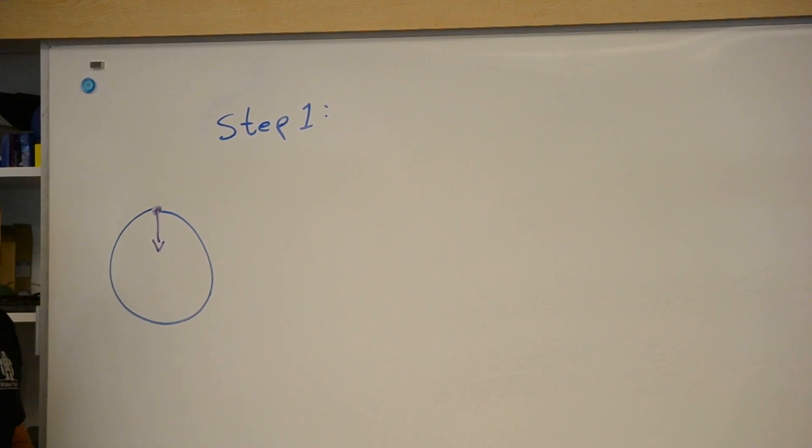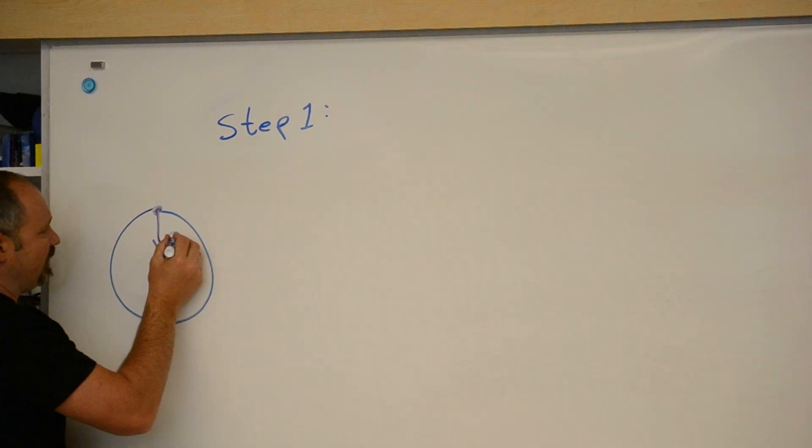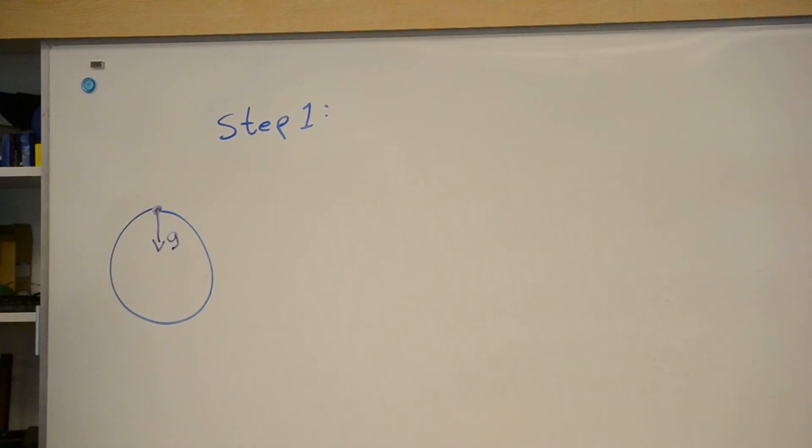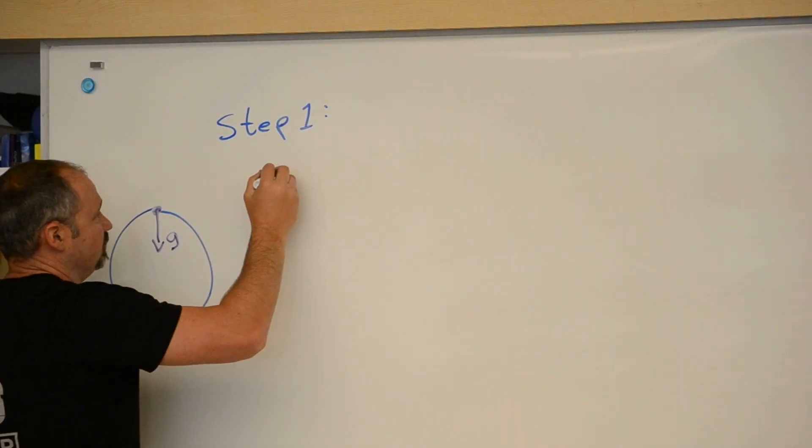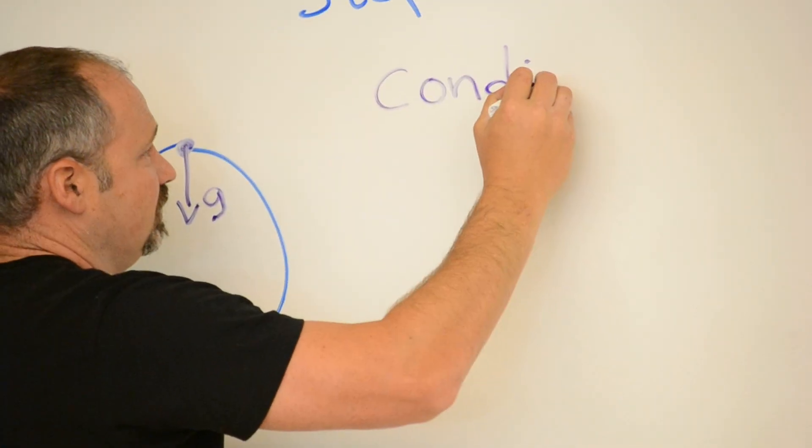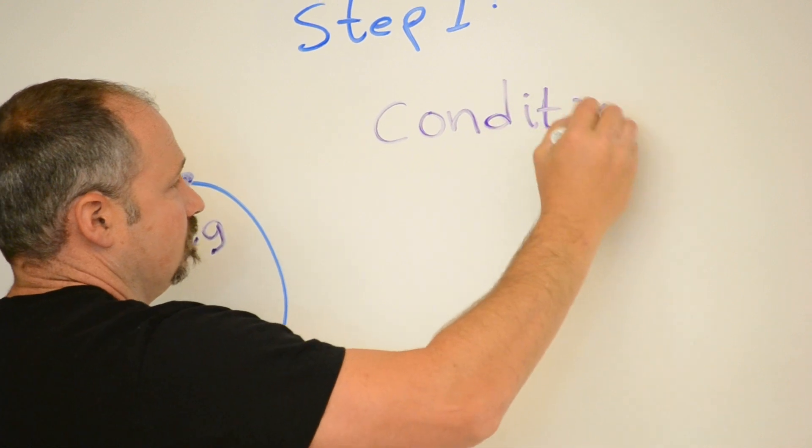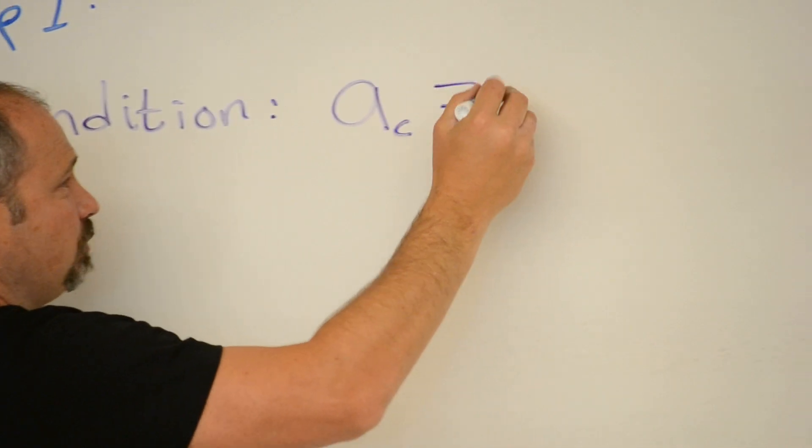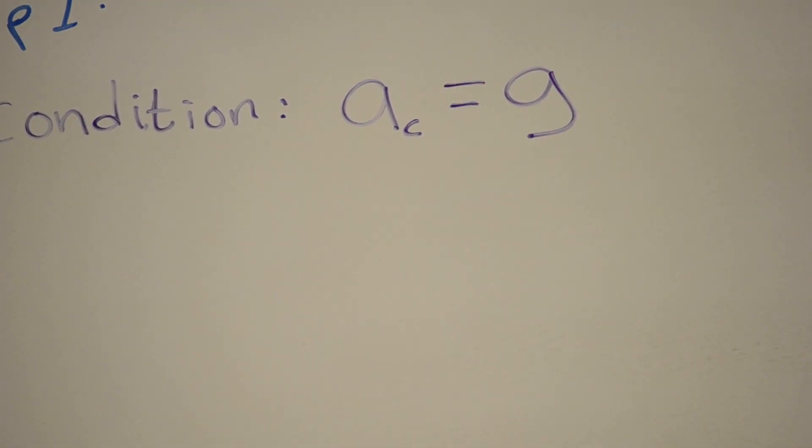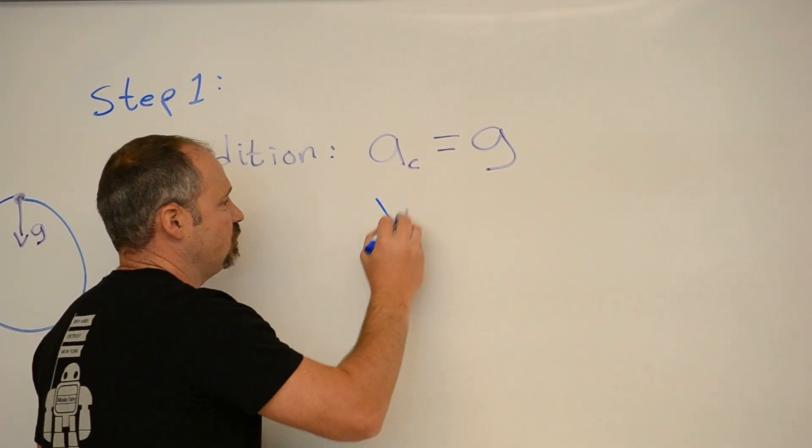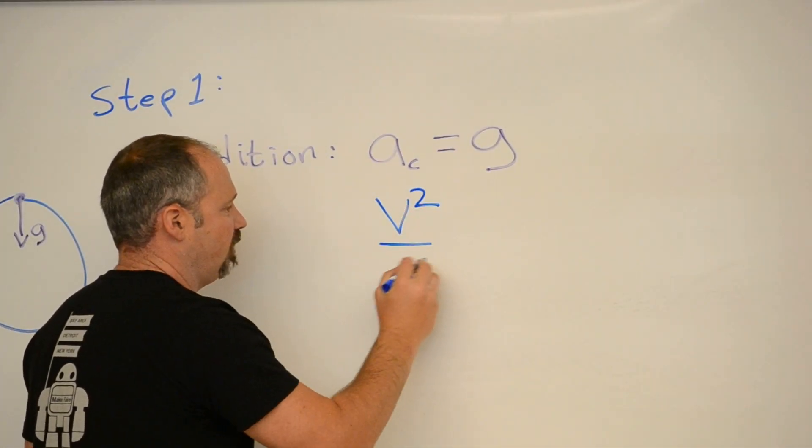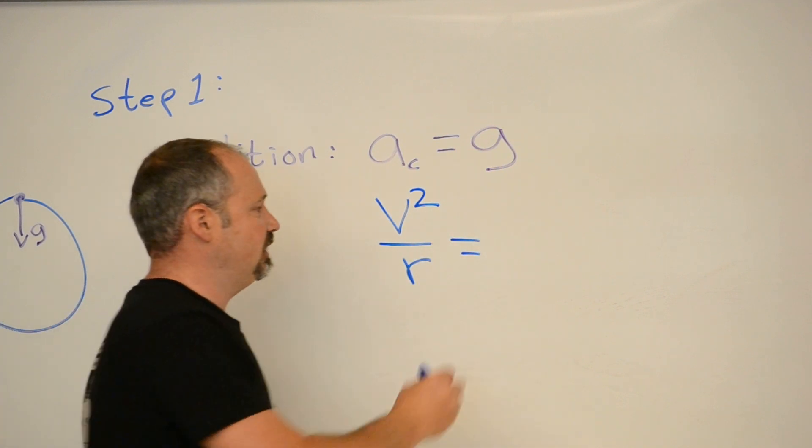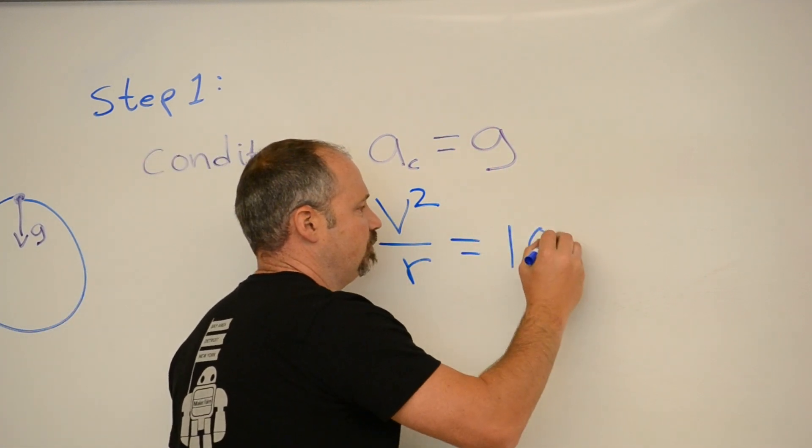Thus, that acceleration g is the centripetal acceleration. So that necessary condition is that the centripetal acceleration is equal to the acceleration of gravity. Let's plug that in. Centripetal acceleration, by definition, is v squared over r, and acceleration of gravity is about 10 meters per second squared.